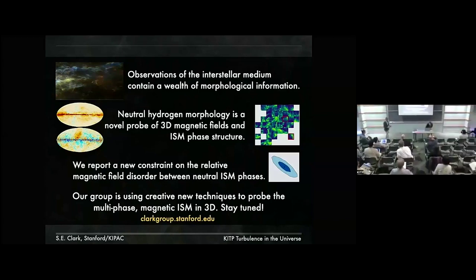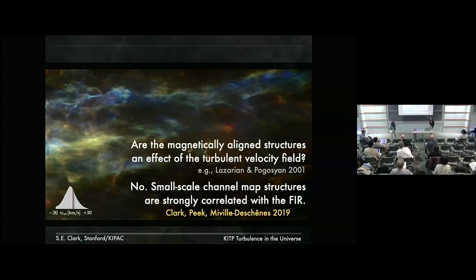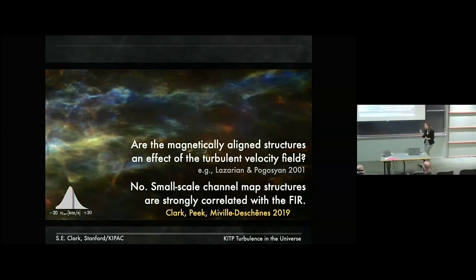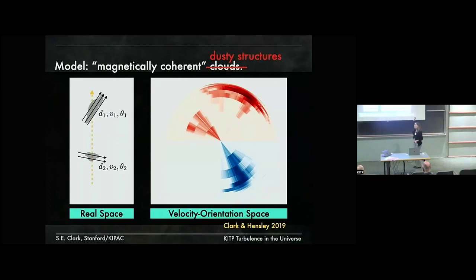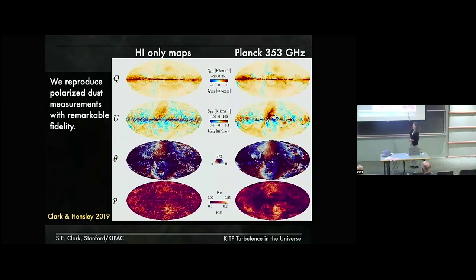This is indeed an alignment seen in the structures in narrow channel maps of emission, but not because it's a velocity space effect. It's because what's driving the magnetic alignment are cold neutral medium structures, which have these narrow line widths that mean they are best probed by velocity channels of say a few kilometers per second. What we do is measure the orientation of those structures in many different velocity channels along the line of sight — it's the intensity-weighted orientation of the HI morphology as a function of that line-of-sight velocity. That is what is extremely well correlated with the dust polarization — the dust polarization is doing that line-of-sight integral for you.